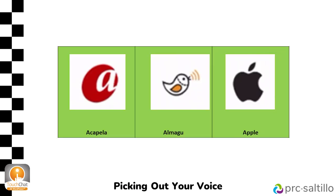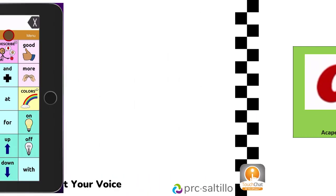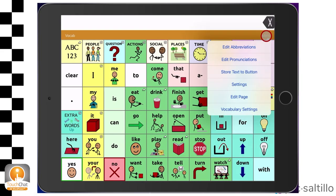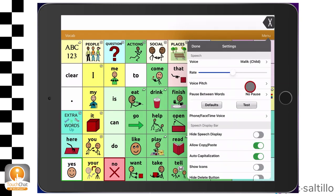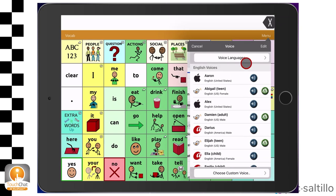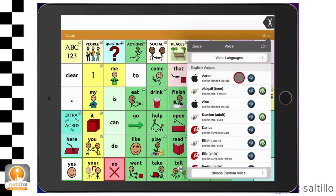Next you will want to select a voice to be used in the TouchChat app. TouchChat offers synthesized child and adult voices from Acapela, Almago, and Apple. To choose a voice, go to Menu, then tap on Settings. Scroll down to where it says Speech, then tap on Voice. Scroll through the options you see. Tap on the speaker to hear a preview of the voice.